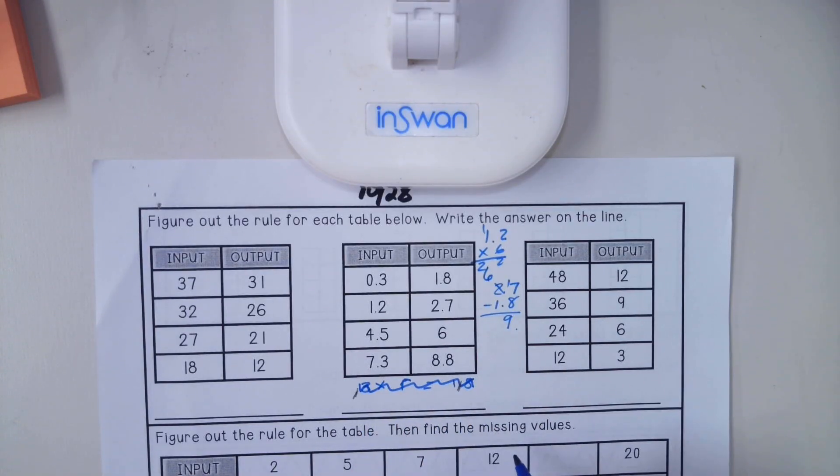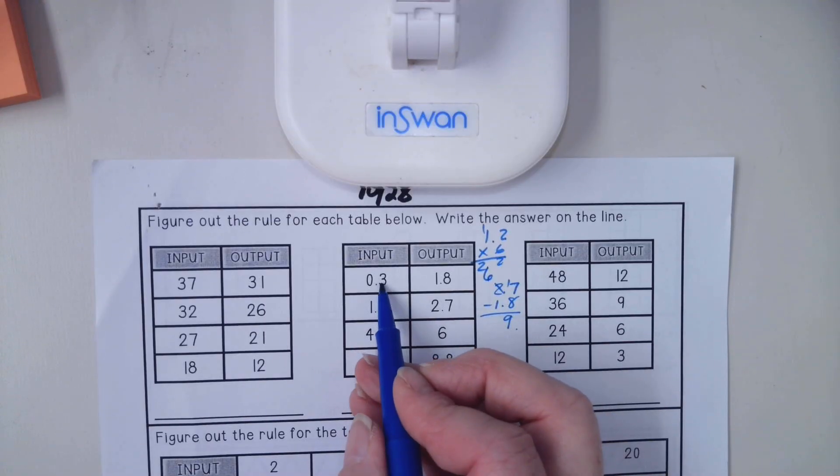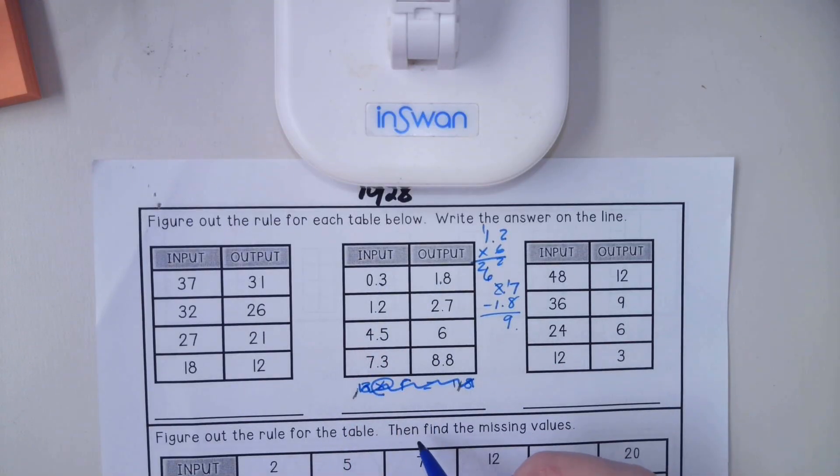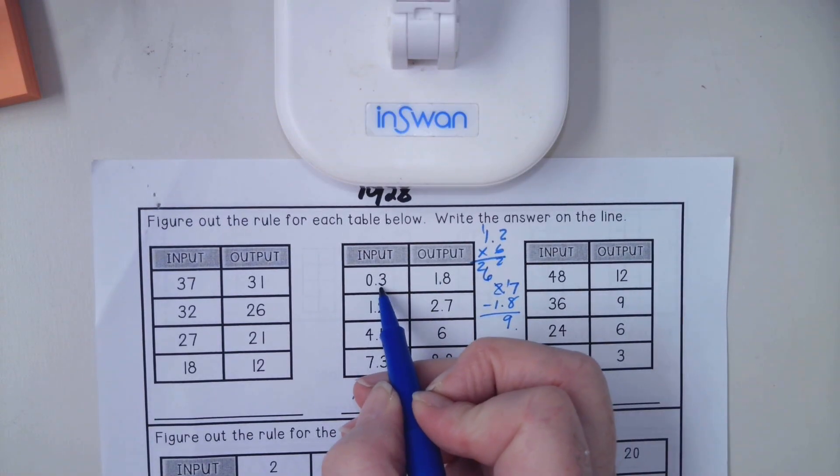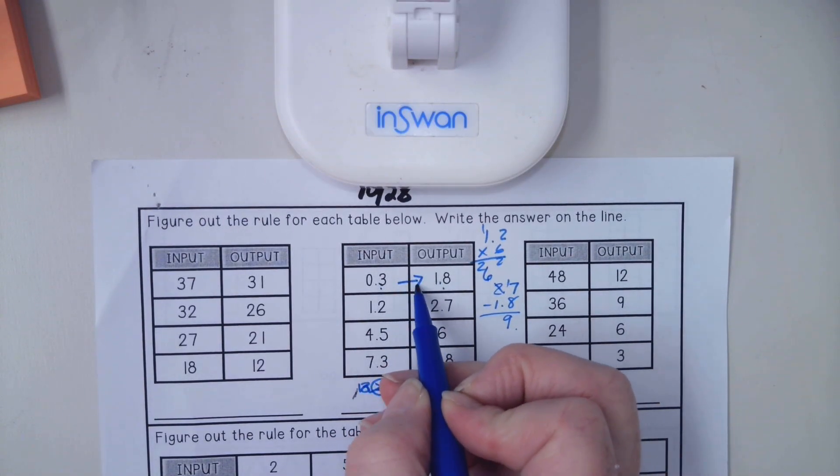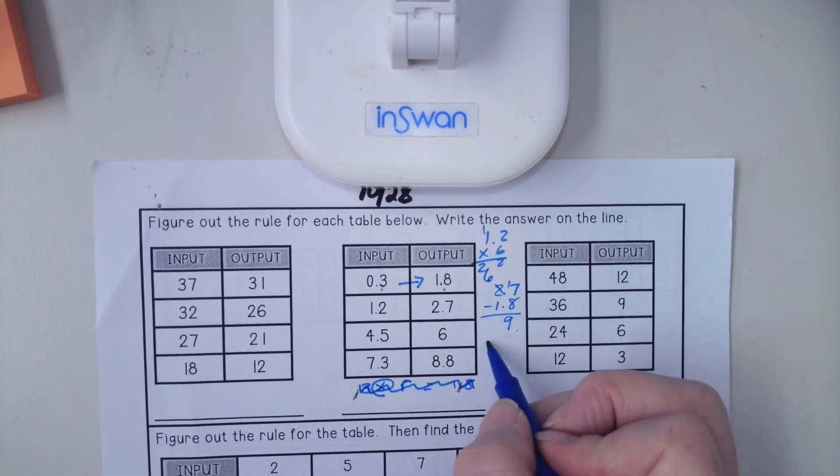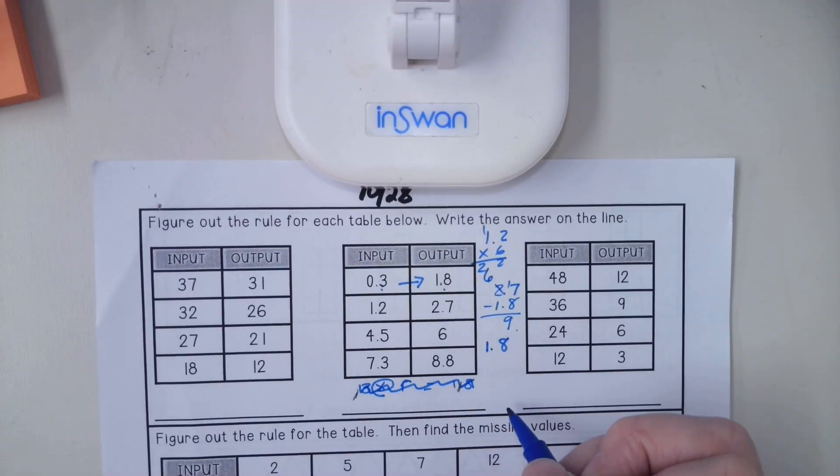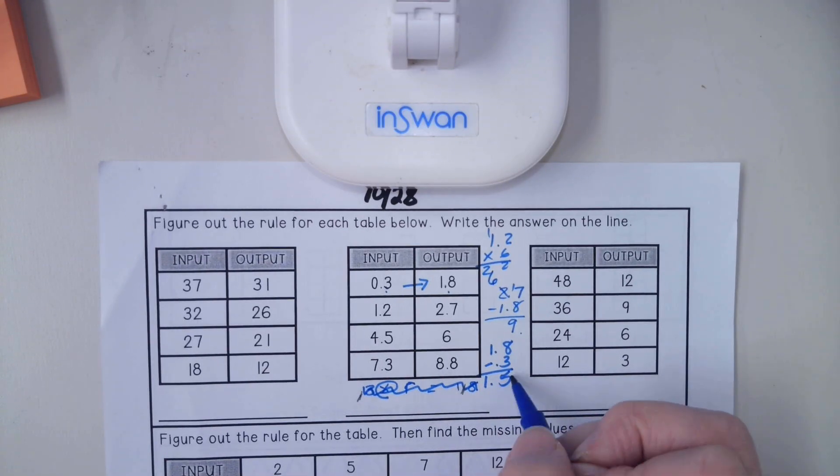So we have to think again. I did multiplication here because I saw a connection between 3 and 18, but that's not working. So now I need to look at a difference. This number is going up, so I have to figure out how much it's going up. Let me go over here and I'm going to take 1.8 minus 0.3 and that is going to get me 1.5.